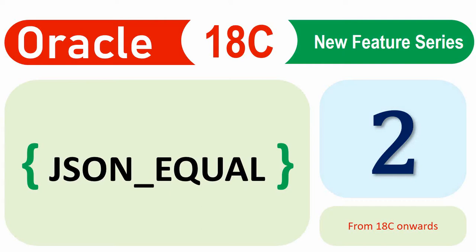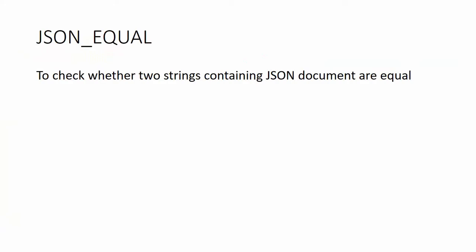We could also write a PL/SQL function or procedure to extract and compare and return whether the given JSONs are equal or not. The problem with all these approaches is that the complexity of the logic increases with the complexity of the JSON. For a simple JSON it's easy, but for complex nested arrays and nested JSON documents it becomes quite difficult. So from 18c, Oracle provides a new function called json_equal which takes two strings containing a JSON document and compares them.